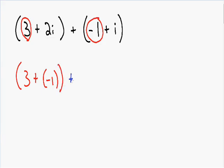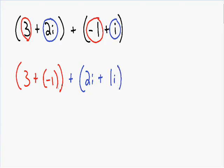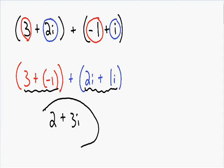We also need to add the imaginary numbers because they're also like terms. We have 2i and a positive i, which is just 1i. So we have 2i plus 1i. Now we simplify: in red we have 3 plus negative 1, which is positive 2. In blue we have 2 plus 1i — 2 plus 1 is equal to 3 — so that's 3i. Here is our solution: 2 plus 3i.